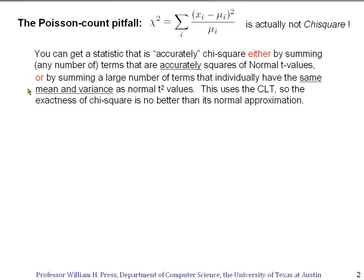The actual t-squared values would go to a Gaussian, and if your t-squared substitute values have the right mean and variance, they'll go to the same Gaussian approximation. Could the Pearson terms be accurate squares of a t-value? Not at all. X is drawn from a Poisson distribution, not a normal distribution. If we take a Poisson variable and subtract a constant and square it, that's nothing at all normal — it's just some messy thing. So what we're relying on is the fact that we have many bins and therefore the central limit theorem will make this approximately chi-square.